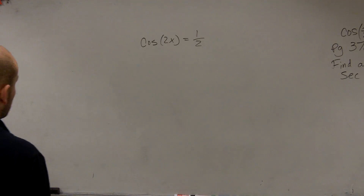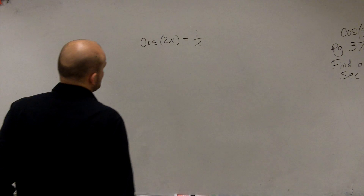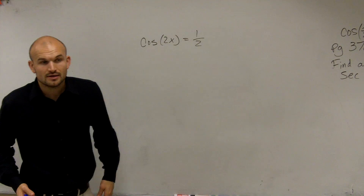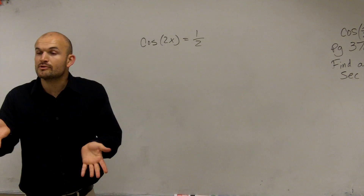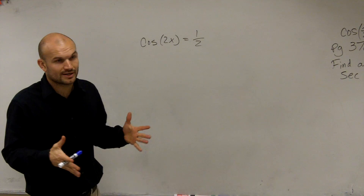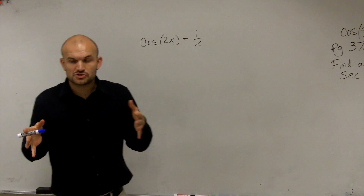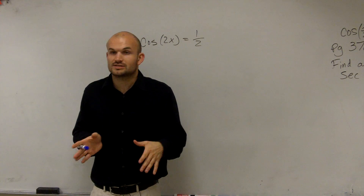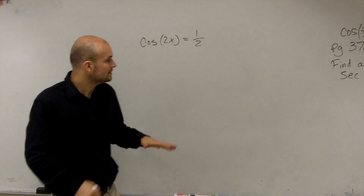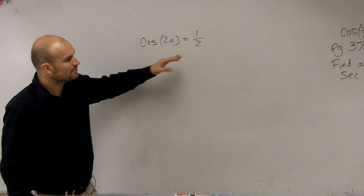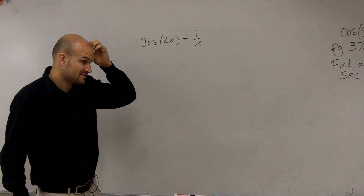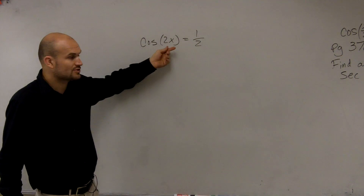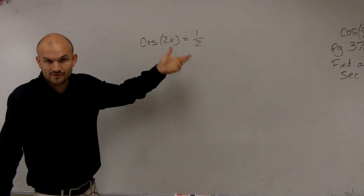On this problem, we have cosine of 2x equals 1/2. The only thing we really need to learn here is to be able to solve for all solutions, not just solutions that are on the interval of 0 and 2π. To first help us find this, we need to determine when cosine of 2x equals 1/2.